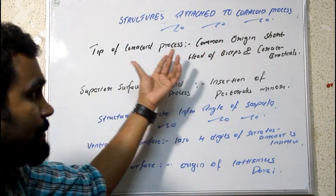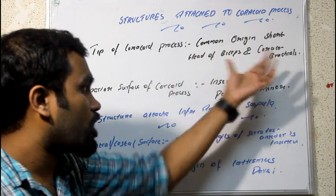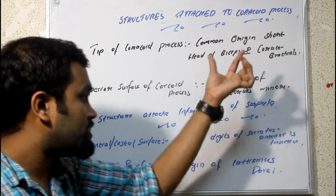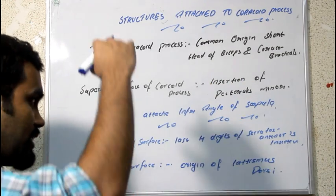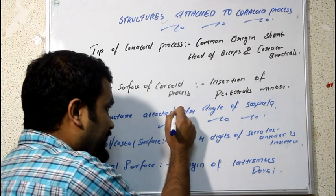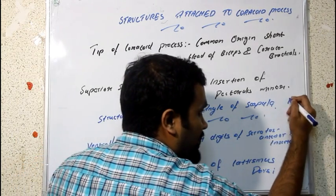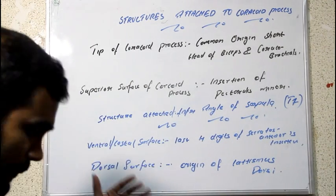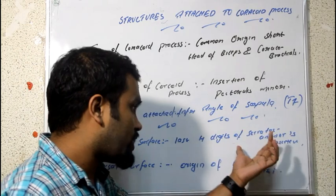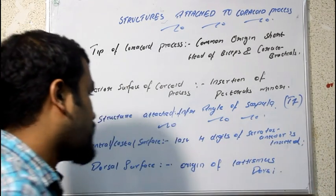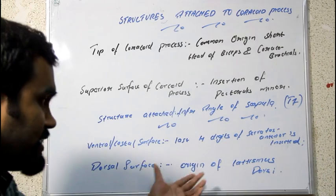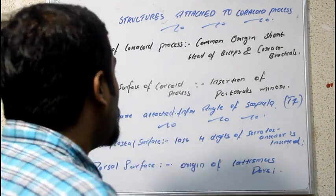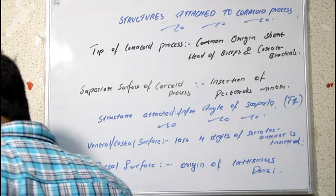To summarize: from the tip of the coracoid process we have the common origin of the short head of biceps and coracobrachialis; on the superior surface is the insertion of pectoralis minor. At the inferior angle of scapula at T7 level, on the ventral or costal surface is the insertion of the last four digitations of serratus anterior, and from the dorsal surface is the origin of latissimus dorsi.